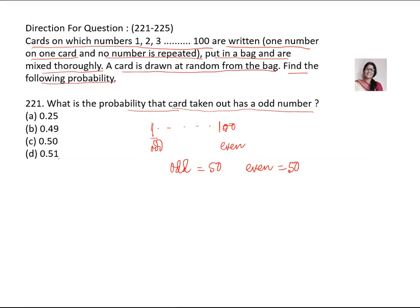Now what are the total? Total is 100. What is the probability of odd number? It will be number of odd 50 upon 100. So it will be 0.50 because answer is given in decimal. So C is answer.